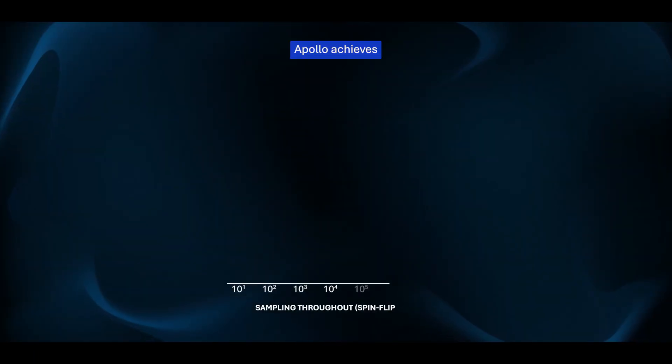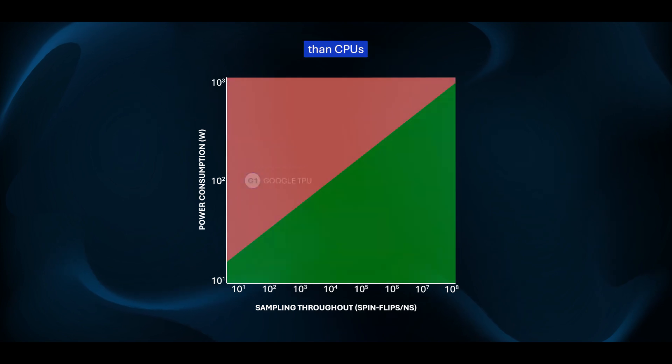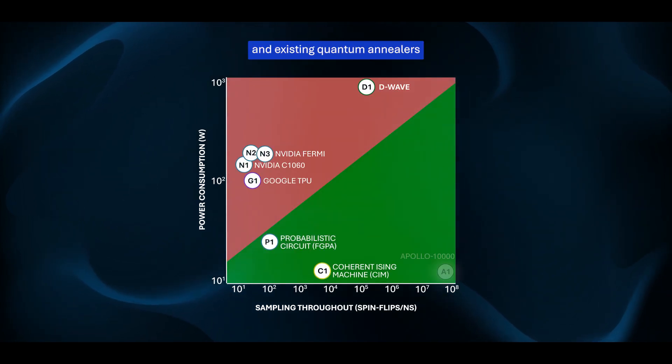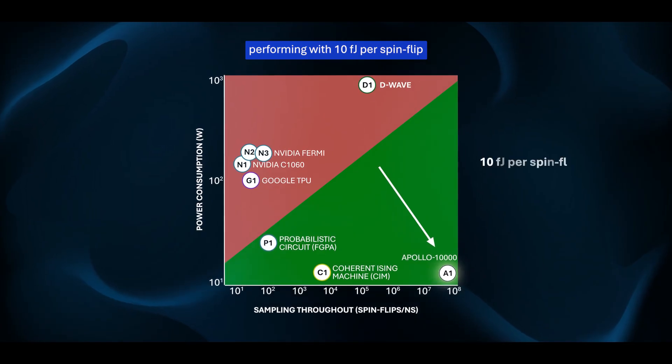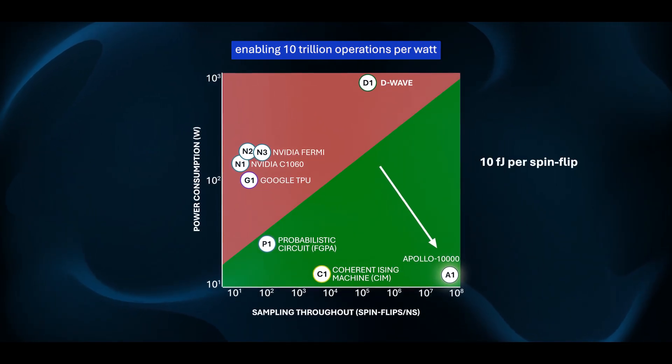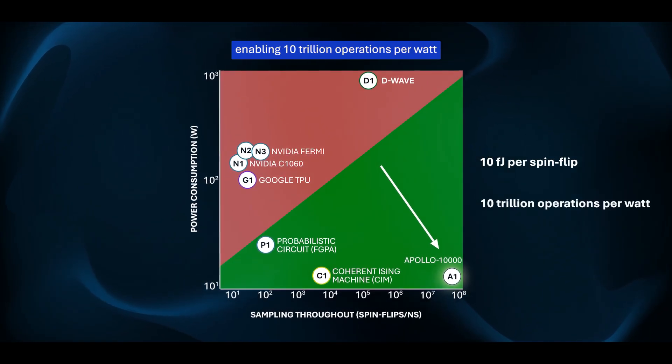Apollo achieves higher levels of efficiency than CPUs, GPUs, TPUs and existing quantum annealers. Performing with 10 femtojoules per spin flip, enabling 10 trillion operations per watt.